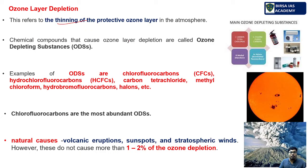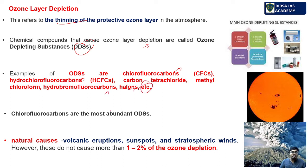The chemical compounds that deplete the ozone layer are called ODS — Ozone Depleting Substances. Examples include chlorofluorocarbons (CFCs), hydrofluorocarbons (HFCs), carbon tetrachloride, methyl chloroform, hydrobromofluorocarbons, and halons. Chlorofluorocarbons are the most abundant of the ozone depleting substances.